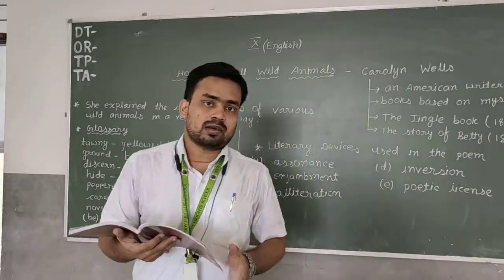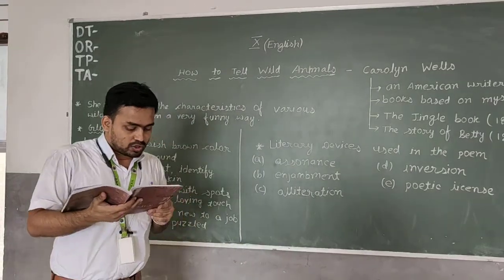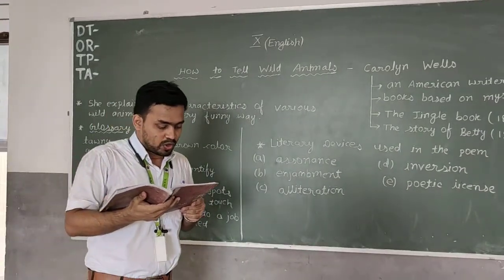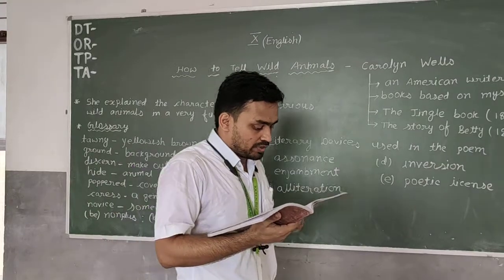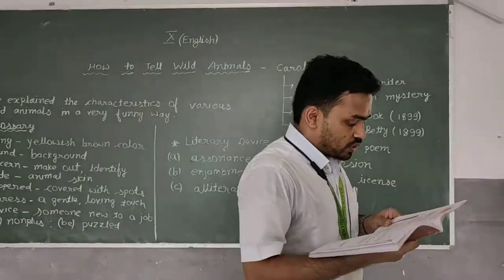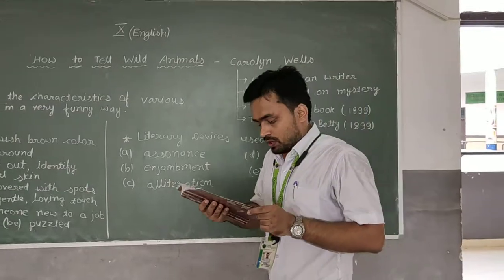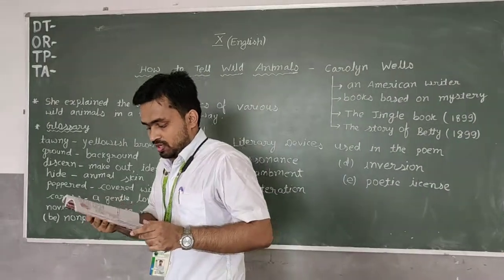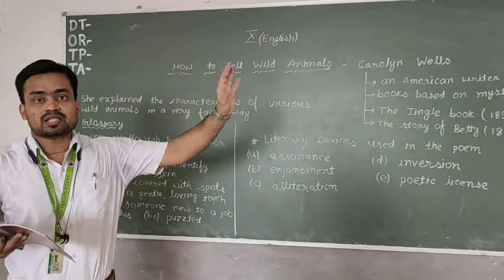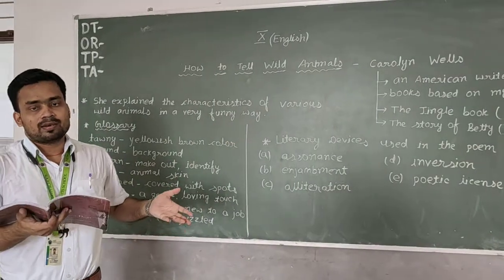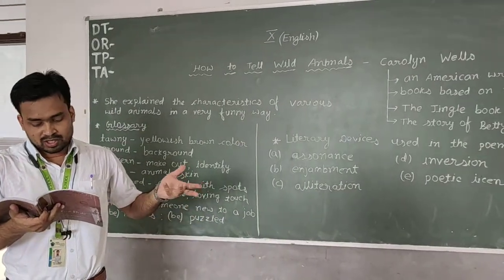And the very last stanza I am going to explain: The true chameleon is small, a lizard sort of thing. He hasn't any ears at all, and not a single wing. If there is nothing on the tree, 'tis the chameleon you see. So if there is nothing on a tree that is not a lizard, of course, that is a chameleon, written by Carolyn Wells.